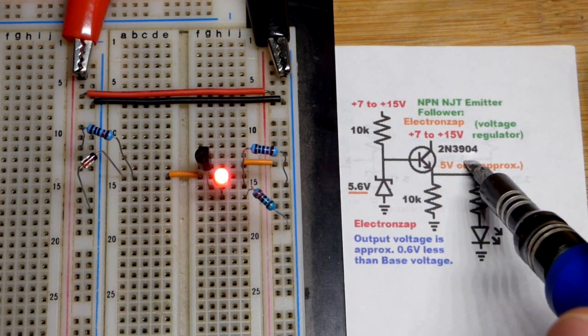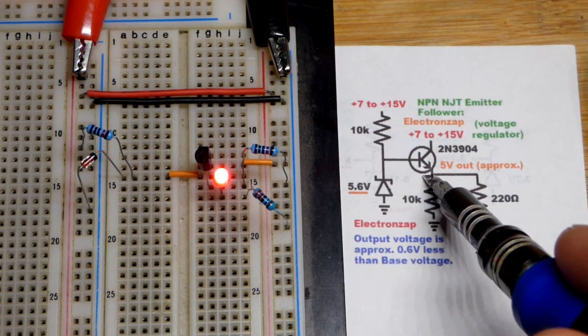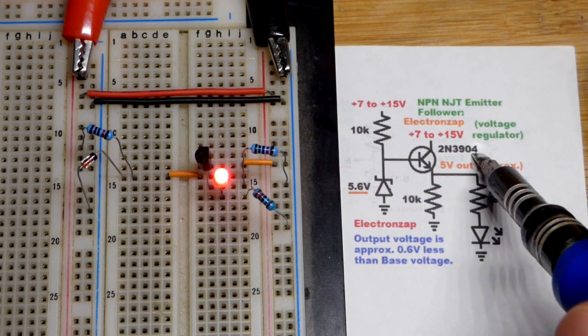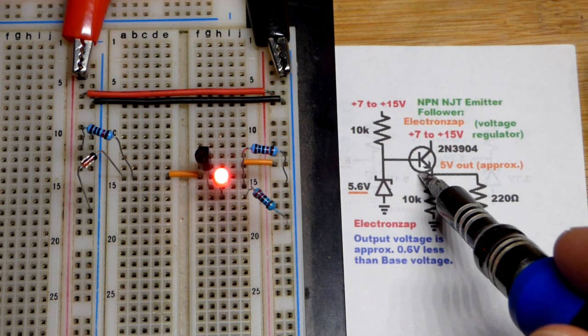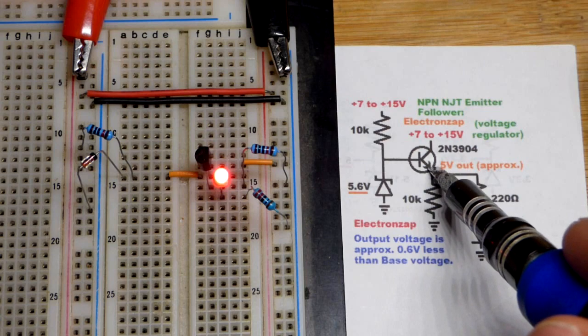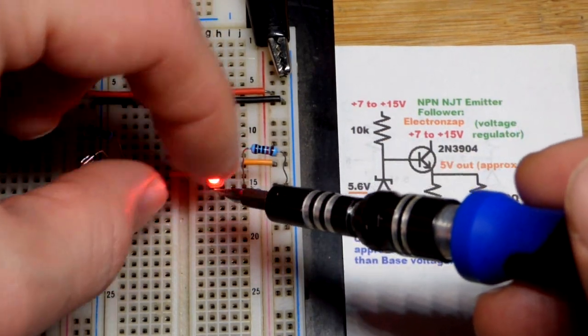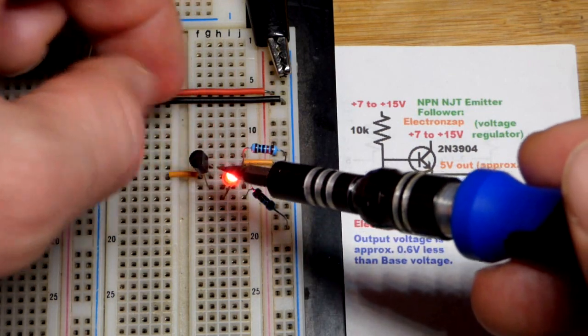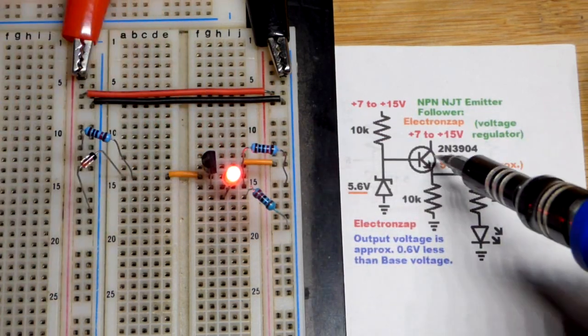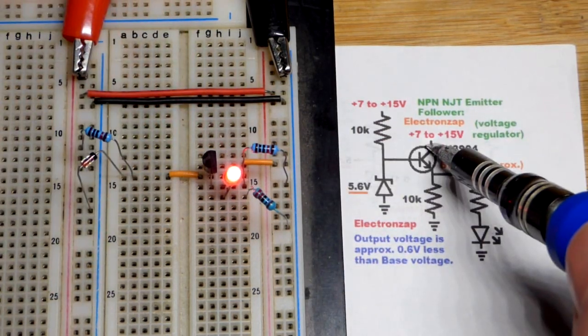And we're using the 2N3904, an NPN bipolar junction transistor. Doesn't matter which one you use really. Probably any will work, although some may have a different pin layout. We have a flat side to the right there. So at the bottom is the emitter, in the middle is the base, and at the top is the collector.